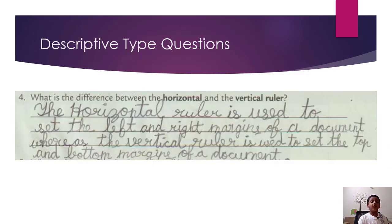Fourth, what is the difference between horizontal and the vertical ruler? The horizontal ruler is used to set the left and right margins of a document, whereas the vertical ruler is used to set the top and bottom margins of a document.